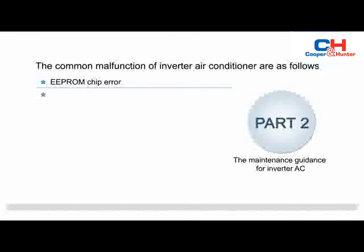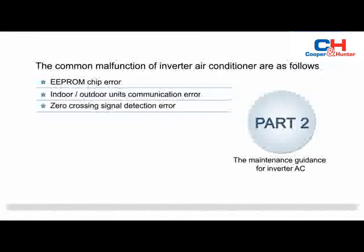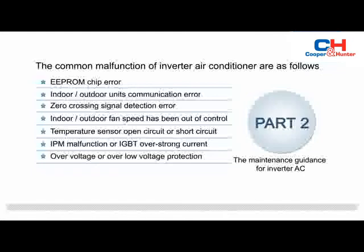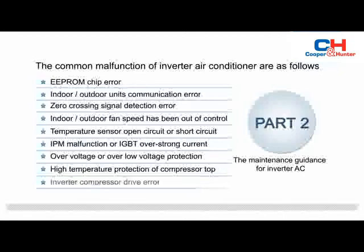The common malfunctions of inverter air conditioner are as follows: EEPROM chip error, indoor-outdoor units communication error, zero crossing signal detection error, indoor-outdoor fan speed out of control, temperature sensor open circuit or short circuit, IPM module function or IGBT over-current, over-voltage or under-voltage protection, high temperature protection of compressor top, inverter compressor drive error.